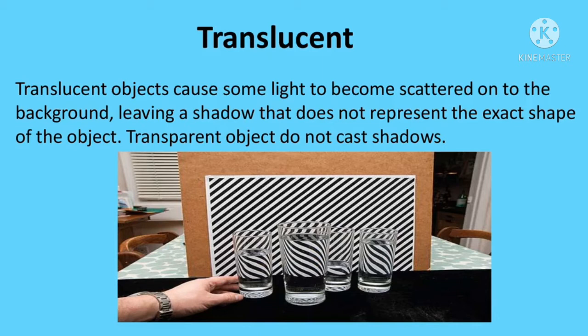Light can pass partially through translucent objects, but we cannot see clearly through them. Any object kept on the other side of a translucent object is not clearly visible, and only a faint shadow forms. Translucent objects allow some light to travel through them. Materials like frosted glass and some plastics are called translucent. When light strikes translucent material, only some of the light passes through, and it does not pass directly through the material.